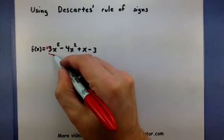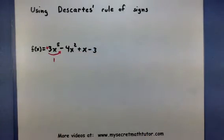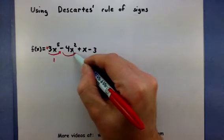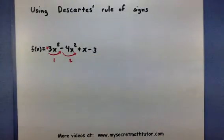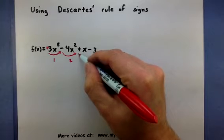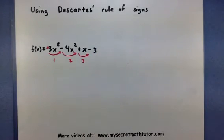Looks like it goes from positive to negative. There's one sign change. It goes from negative to positive. There's two sign changes. And it looks like finally it goes from positive to negative, so three sign changes.